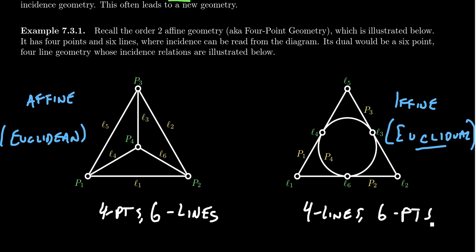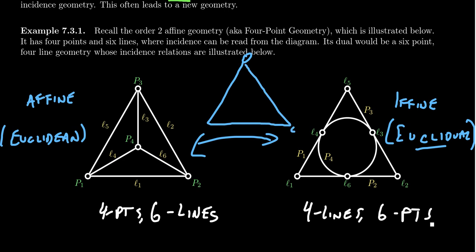If we overlay these two geometries on top of each other, you get a picture that looks like the Deathly Hallows — the Cloak of Invisibility, the Resurrection Stone, and three Elder Wands. If you completely overlay those pictures, you get the Fano plane. This is not a coincidence: if you take an affine geometry, construct its Euclide dual, and overlay the two geometries strategically, you can construct a projective geometry — the Fano plane being an example.